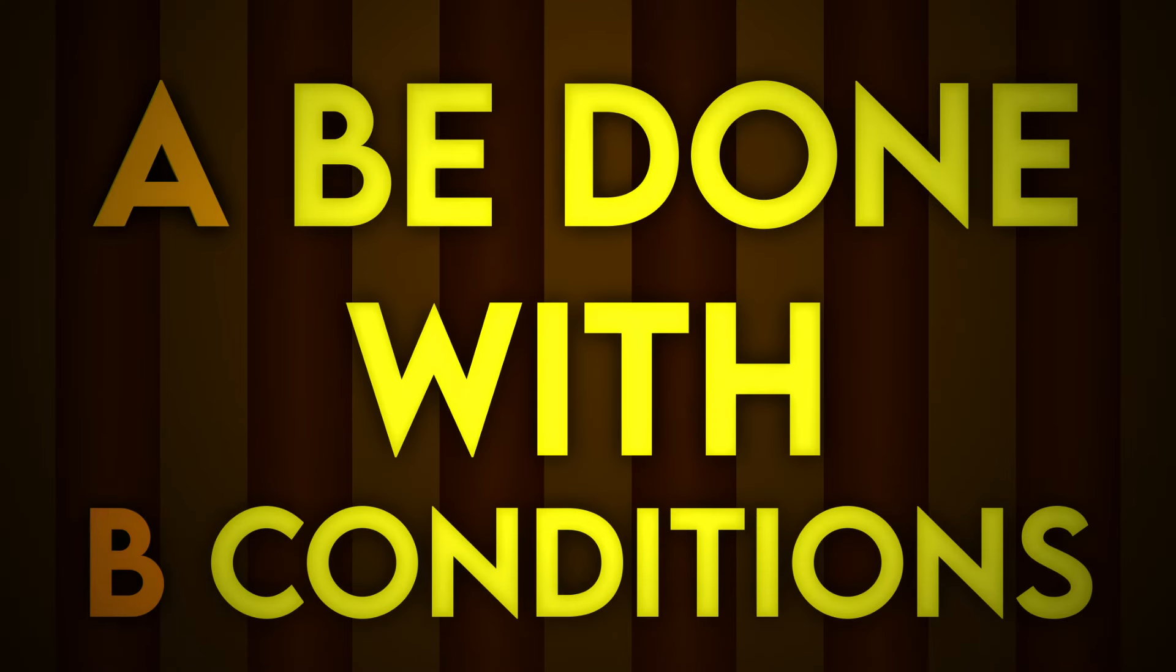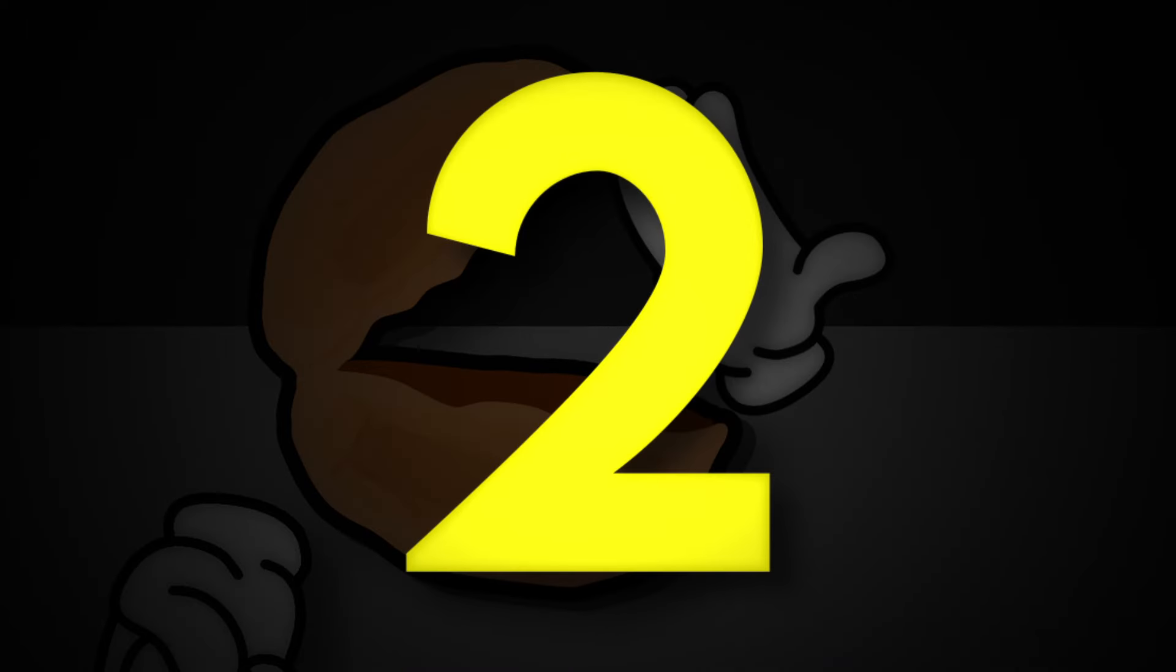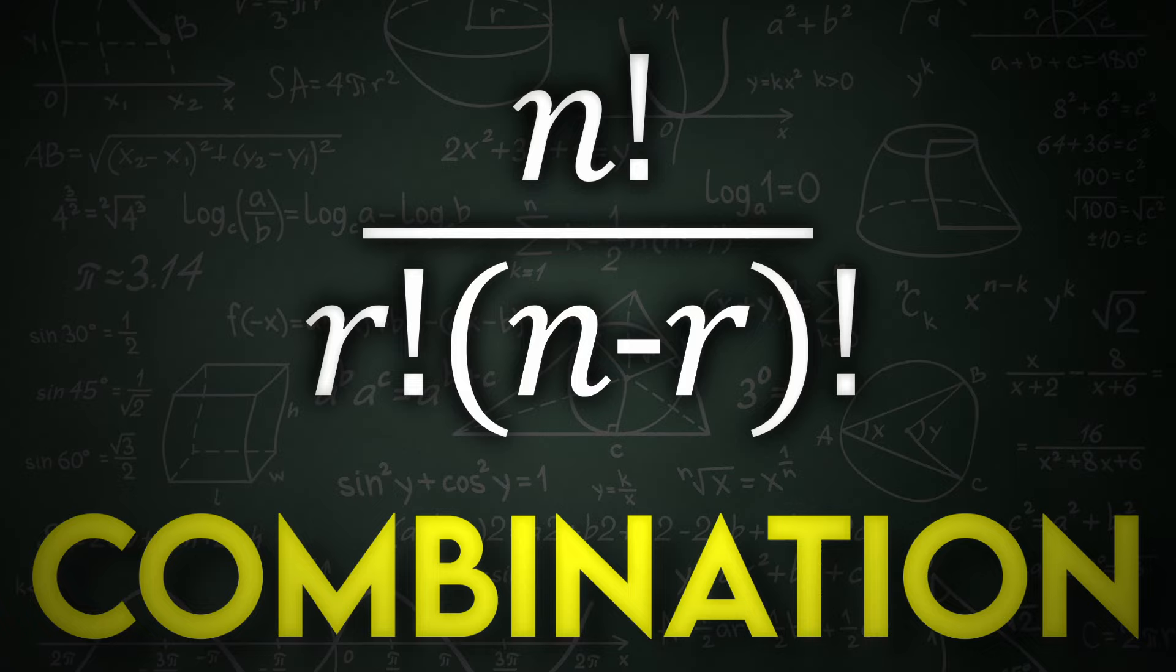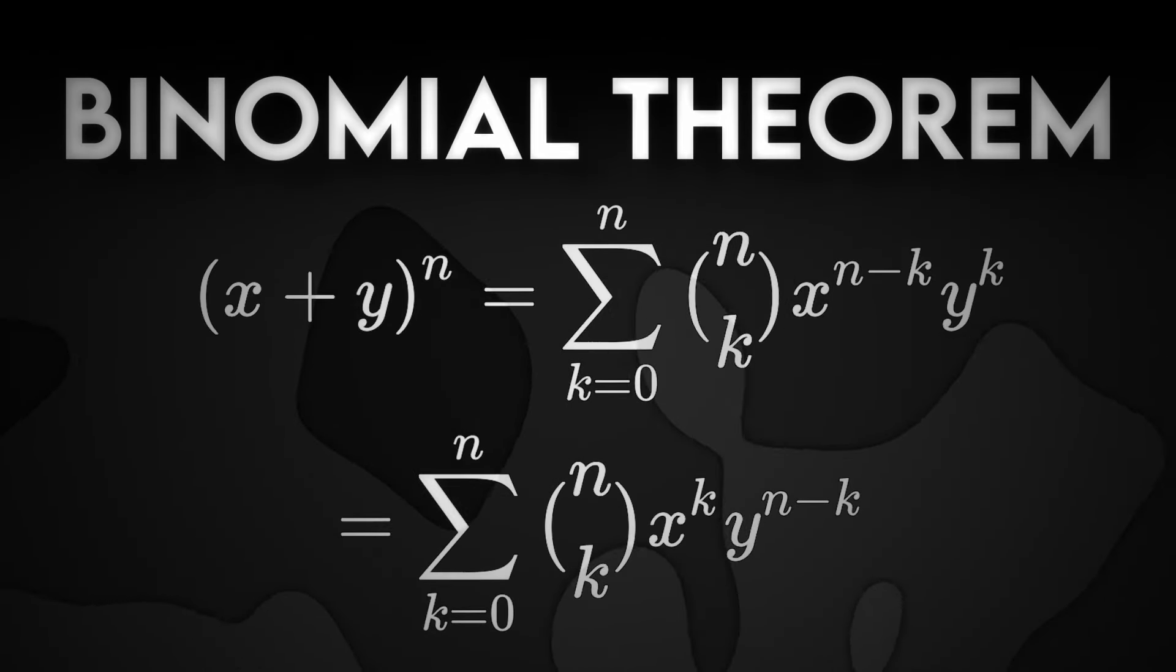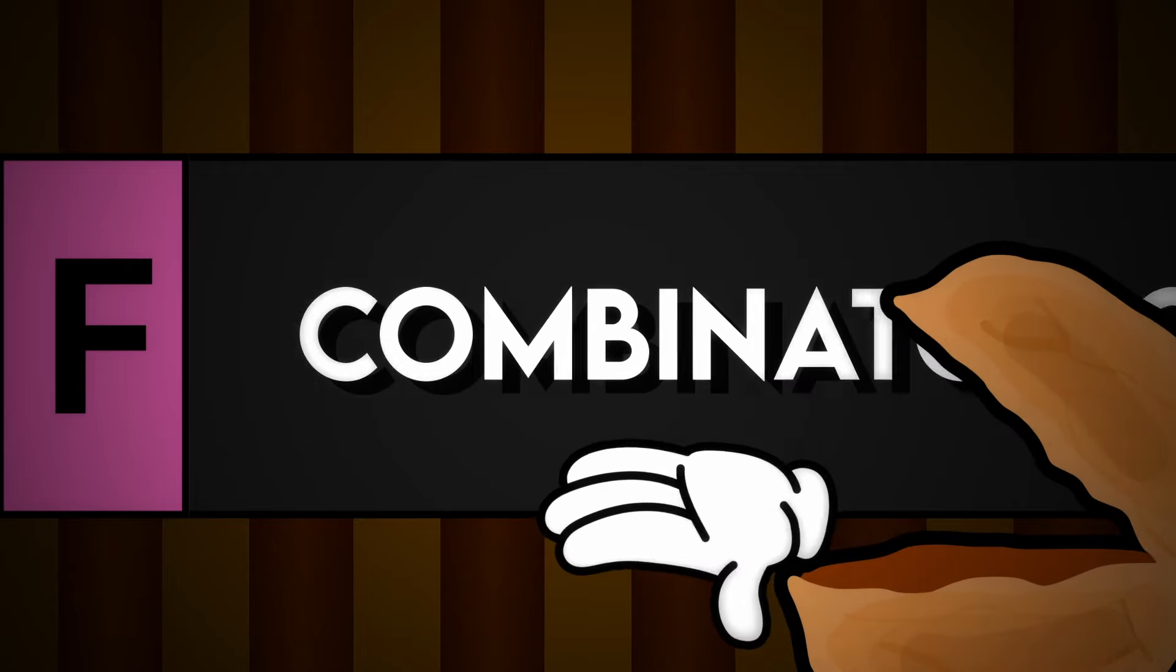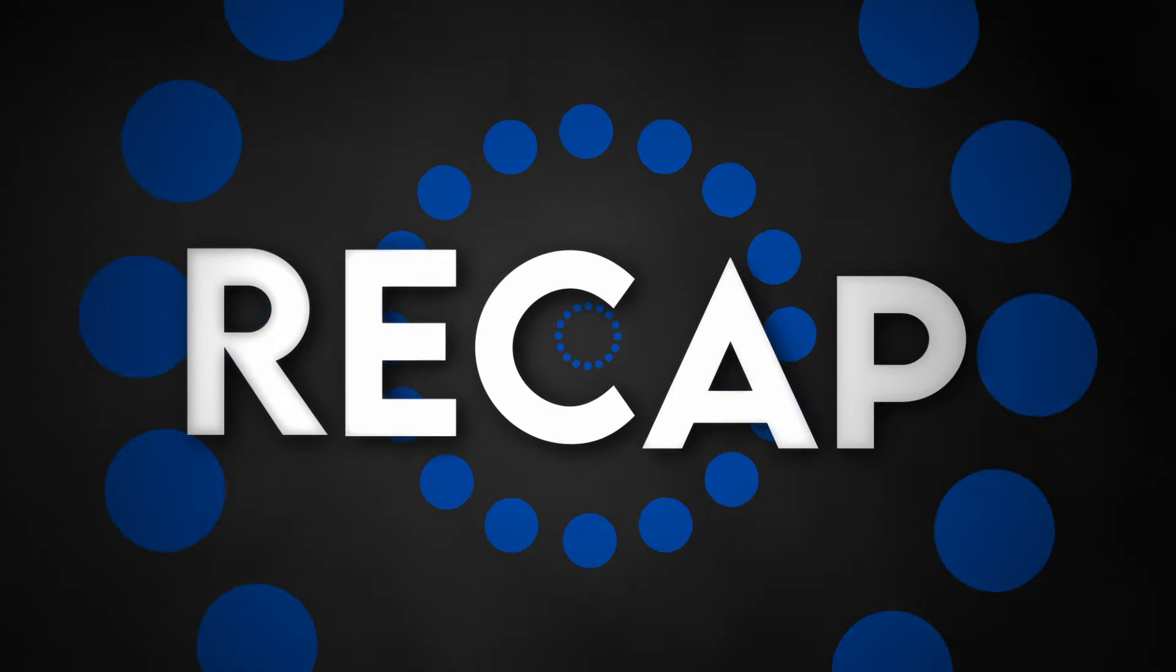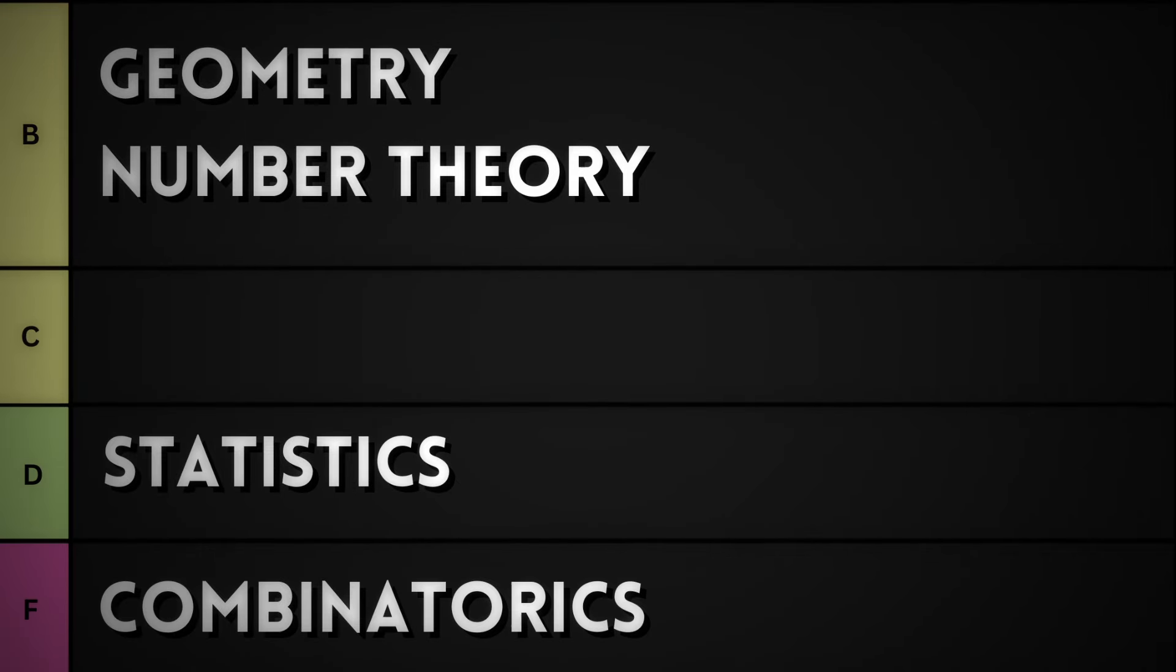Its whole field can be described with one sentence: How many ways can A be done with B conditions? Combinatorics somehow only utilizes two main formulas, one literally being a direct division of the other. It takes around two weeks to learn this field in school, and even though it gets used in other fields, that's about it. F tier. Well, I just annoyed all of those combinatorics fans. Anyways, to recap, here's the tier list, algebra at the top, and combinatorics at the bottom.